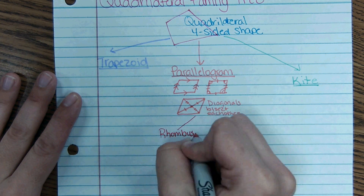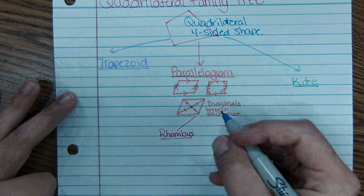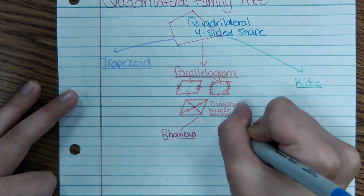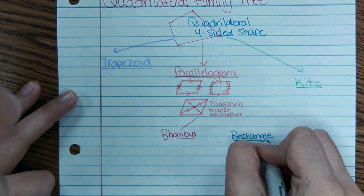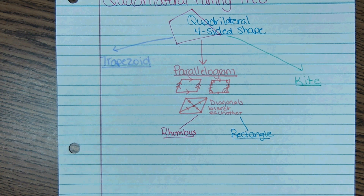Remember to leave room in your notes for trapezoid and kite, which we're doing on Tuesday. A parallelogram has two 'babies': one is named rhombus, and the other is named rectangle.